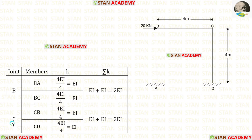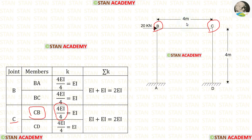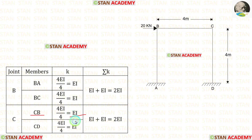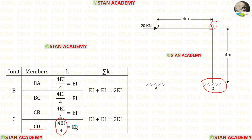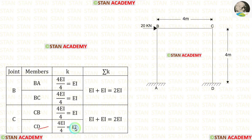Now let us find the stiffness at joint C. For CB: from point C, we look at point B — point B is continuous. Using 4EI upon L with length 4, stiffness of CB equals EI. For CD: from point C, we look at point D — there is a fixed support. Using 4EI upon L with length 4, stiffness of CD equals EI.